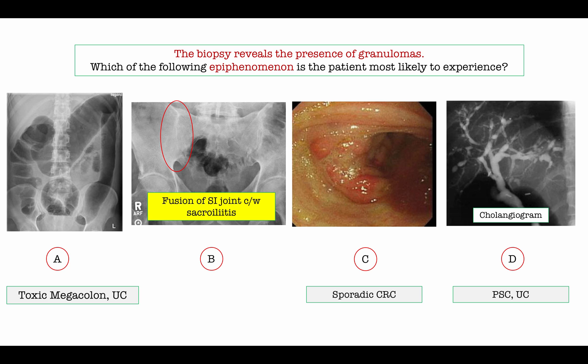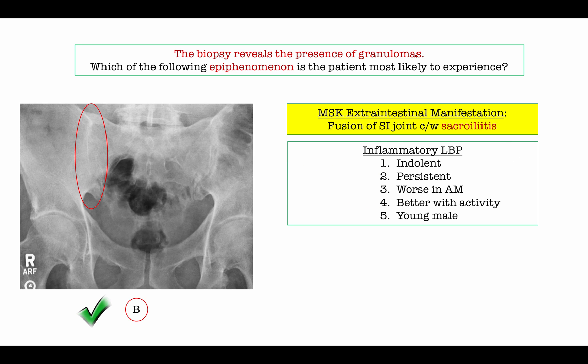Summary: A is toxic megacolon, typically associated with ulcerative colitis; C is sporadic colorectal cancer; D is sclerosing cholangitis, also associated with ulcerative colitis. The correct answer is B — the option shows a film with blurring of the right SI joint. You need to be familiar with sacroiliitis and its association with inflammatory bowel disease, and Crohn's in particular. They may describe inflammatory back pain symptoms rather than stating sacroiliitis directly. Sacroiliitis was the most likely epiphenomenon associated with this diagnosis of Crohn's disease.